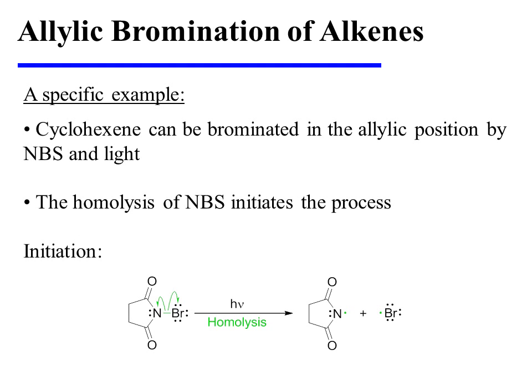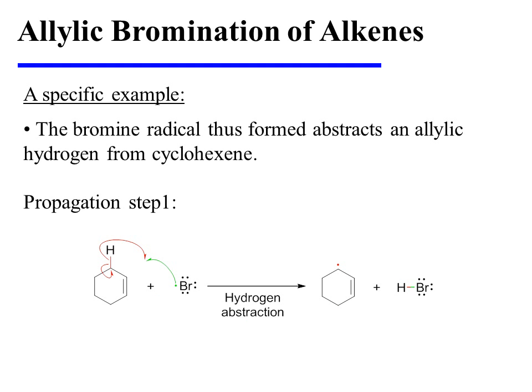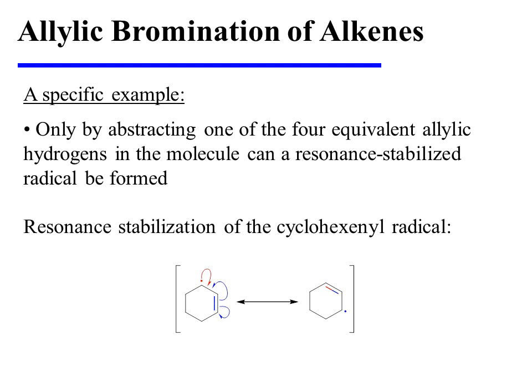As a specific example, consider the bromination of cyclohexene in its allylic position using NBS and light. The process begins with the homolysis of NBS, yielding the bromine radical needed for propagation step 1. The bromine radical abstracts a hydrogen atom from the allylic position of cyclohexene, affording HBr as a byproduct and an allylic radical. Although there are many hydrogens in this molecule, it is only by abstracting one of the four equivalent allylic hydrogens that a resonance-stabilized radical can be formed. The resonance structures of this radical are equivalent due to the symmetry of the molecule.